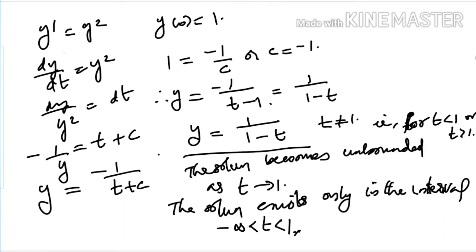The equation dy/dt = y² is separable. Converting to the separable form and integrating, we obtain the solution after applying the initial condition as y = 1/(1 − t).